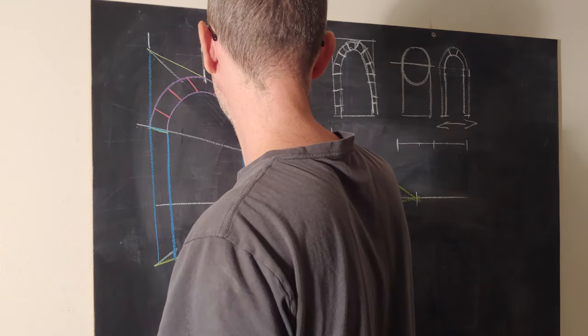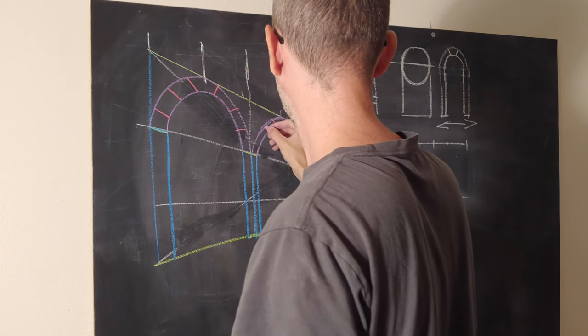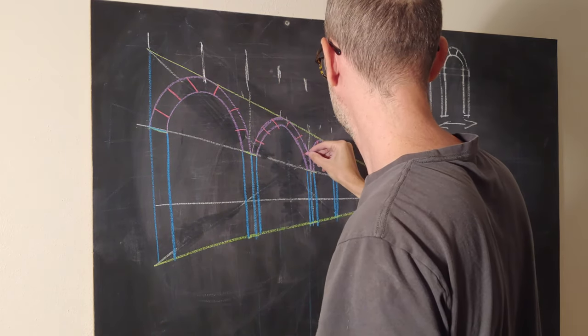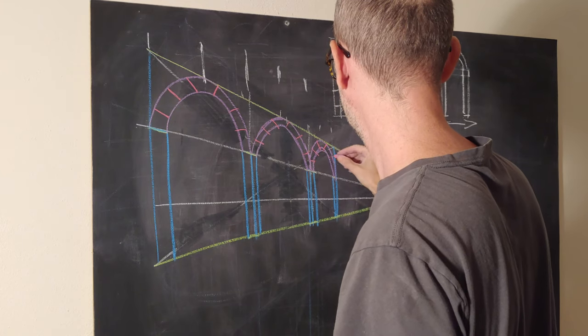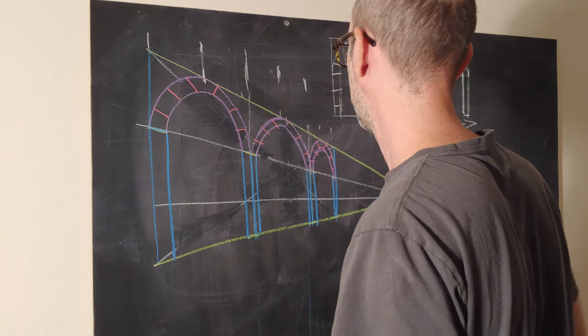We're going to do two subdivisions on each side. One, two, one, two, one, two, one, one, two.